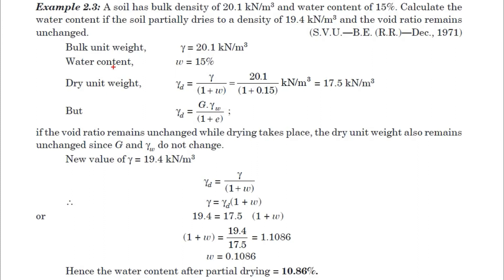Hello friends, today we are going to see a problem related to soil mechanics. The problem is: a soil has a bulk density of 20.1 kN/m³ and a water content of 15%. Calculate the water content if the soil is partially dried to a density of 19.4 kN/m³ and the void ratio remains unchanged.